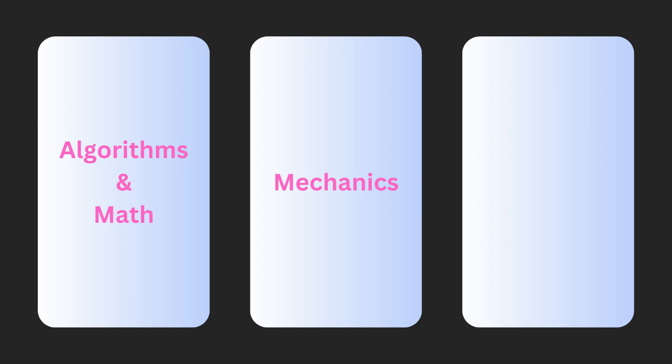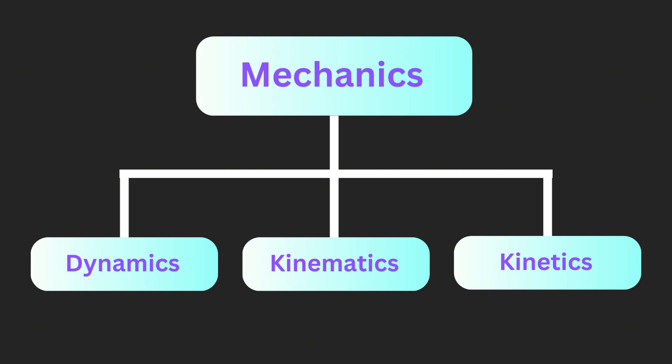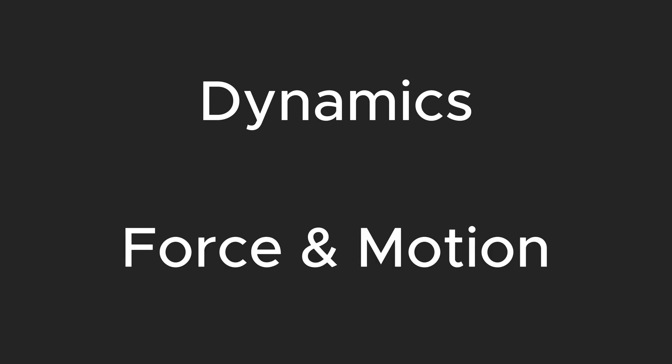The second block of robotics is about mechanics, which forms the physical foundation of how robots move and interact with the world. Mechanics at a high level can be broken down into three core areas: dynamics, kinematics, and kinetics. Don't worry too much if these terms sound too technical, because they are essentially extensions of what you learned in Physics 101. First, dynamics — the study of forces and motion.